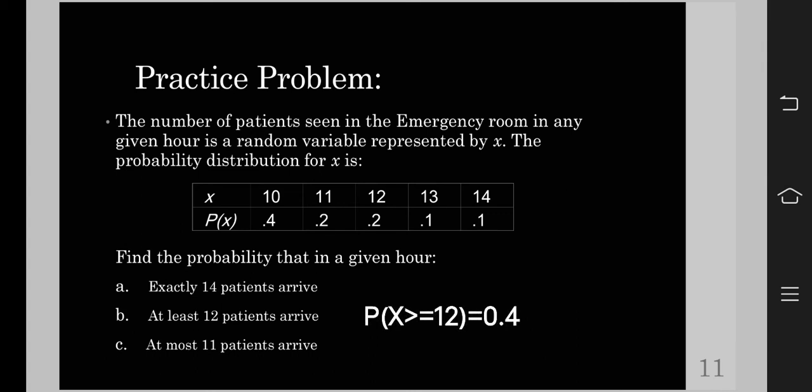So the probability that at least 12 patients arrive is 0.4. And for letter C, at most 11 patients arrive. Since we have here the keyword at most, we are going to consider 10 and 11, since 10 is included in the word at most 11.